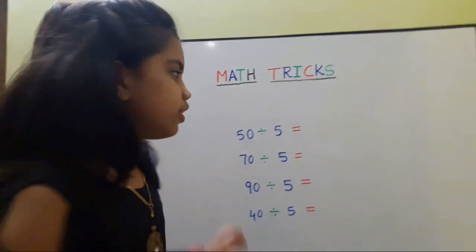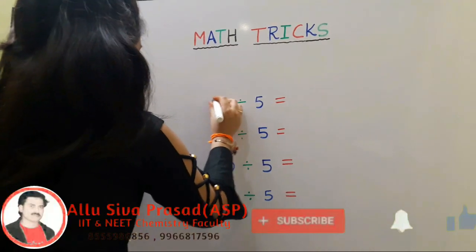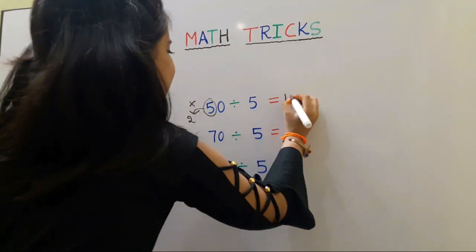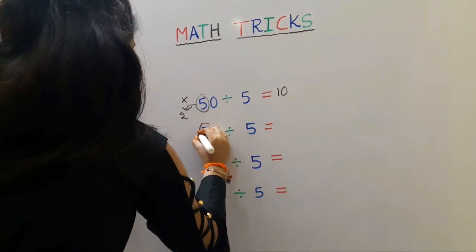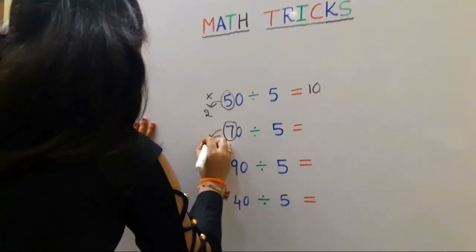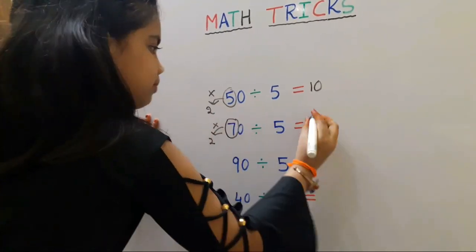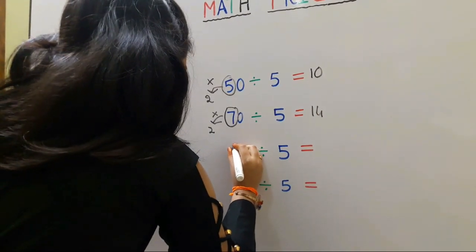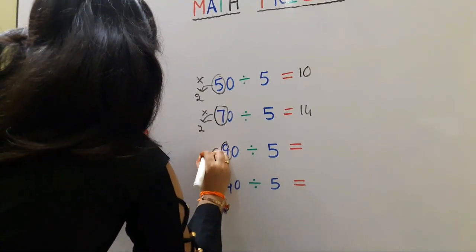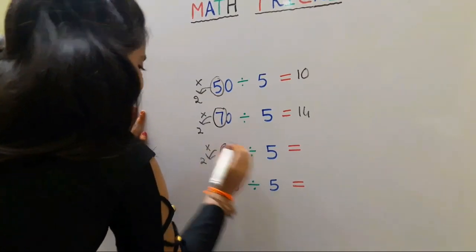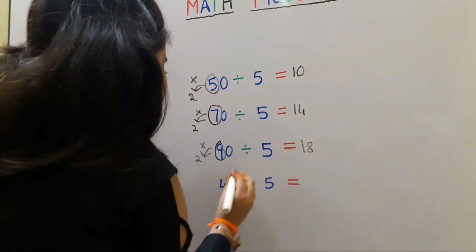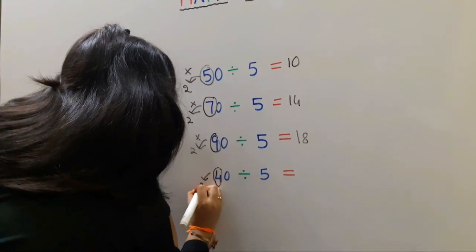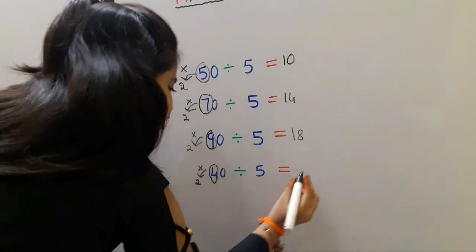Next trick in division. We should multiply the 10's place with 2. 5 2's are 10. Next one, we should multiply the 10's place with 2: 7 2's are 14. Next, 9 2's are 18. Next, 4 2's are 8.